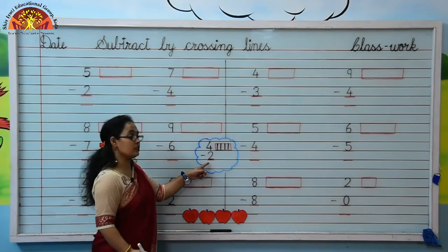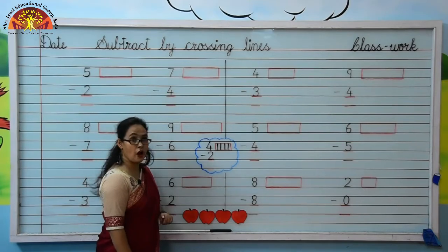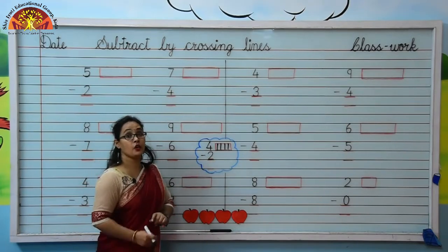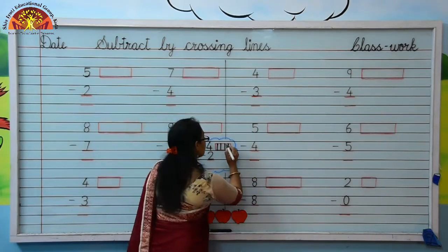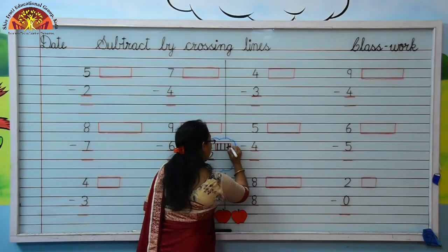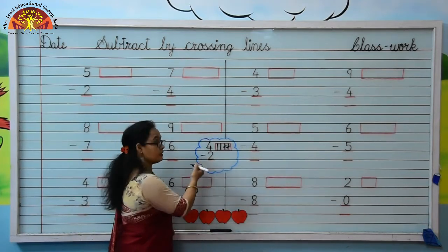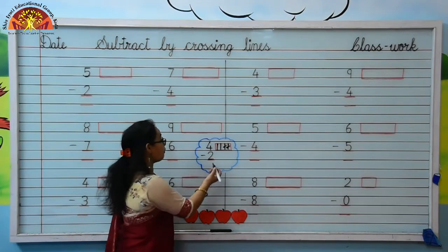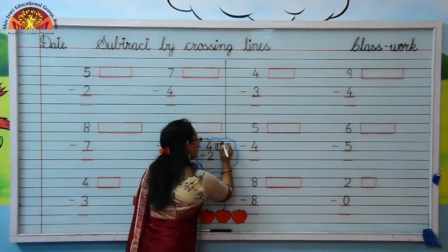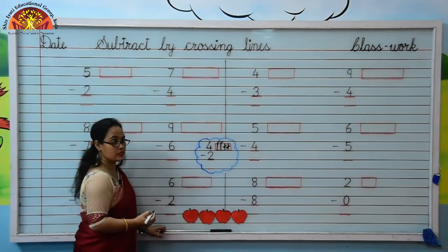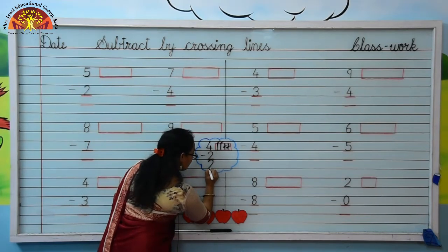The downside number is 2. Kids, we will take 2 lines from 4 lines. So how will we take? By cross. Cross like this: 1, 2. Kids, how many lines are there? Let's count them: 1, 2. Yes, 2 lines are there.